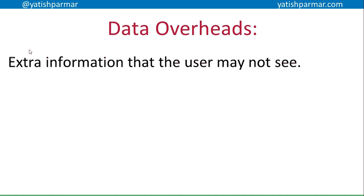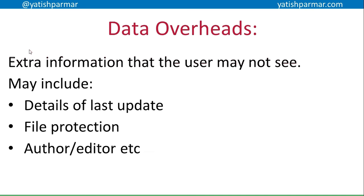What do I mean by data overhead? This is extra information — basically metadata — that the user might not see, but other people might be interested in for various reasons. It could include details like the last update, file protection information, the author of the file, the editor of the file, and so on. Essentially, it's metadata.